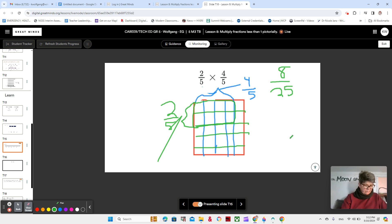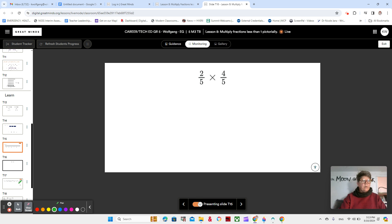Is it reasonable that two fifths of four fifths is eight twenty-fifths? Two fifths is less than one. Eight twenty-fifths is less than four fifths. So yeah, that's very reasonable. So we always want to check for reasonableness and make sure it makes sense. Let's do one more. Make sure you have this written down because I'm going to erase it.